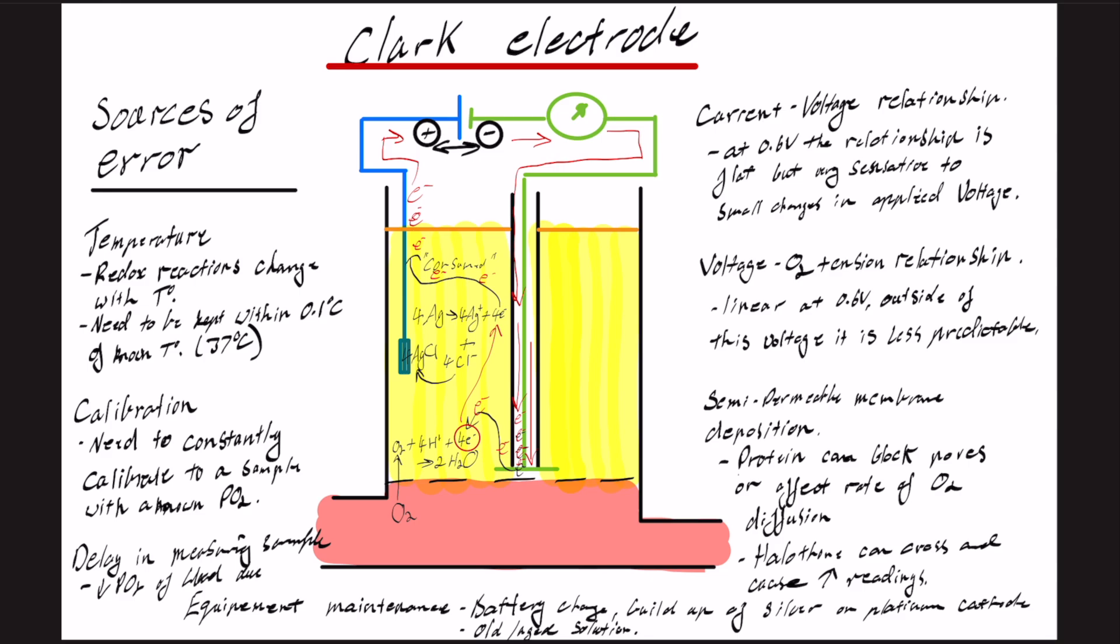So for example, if it takes too long to get the blood and then put it into the ABG machine where the Clark electrode can measure, your red cells and other cells can use up the oxygen and you'll get a lower oxygen reading just because of the ongoing metabolism within the blood.